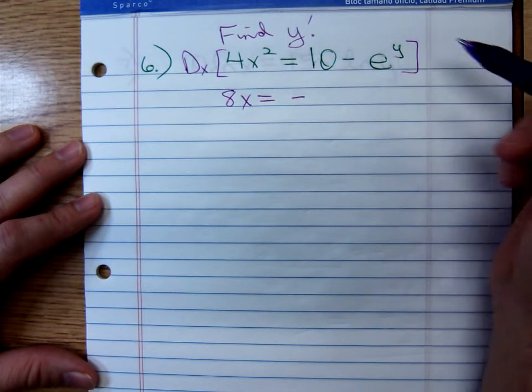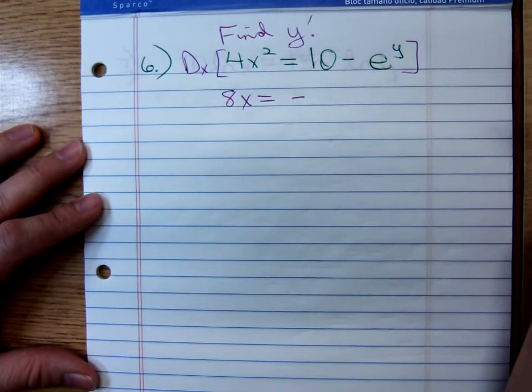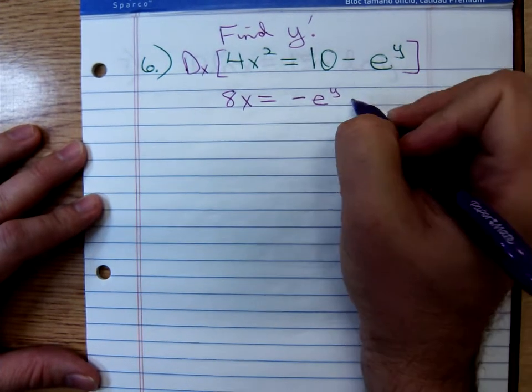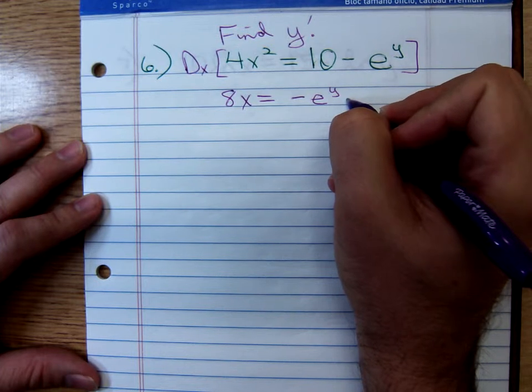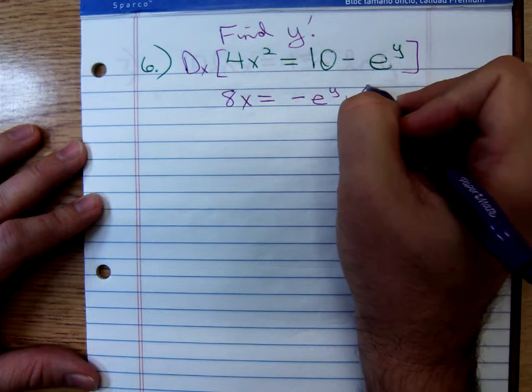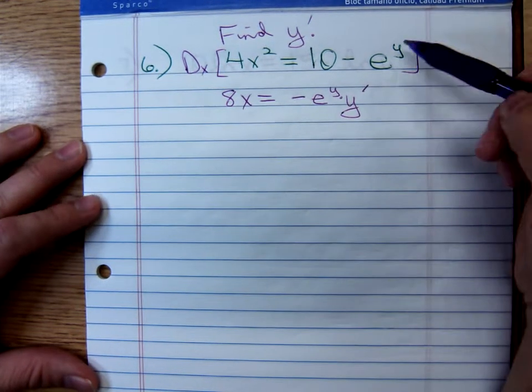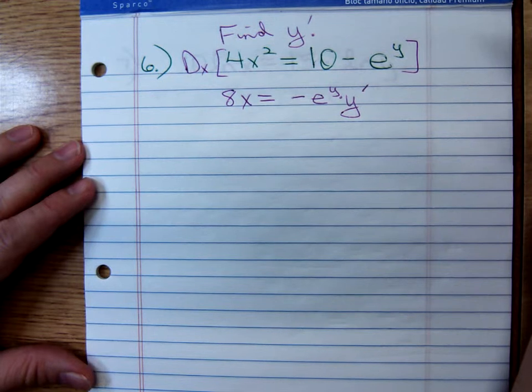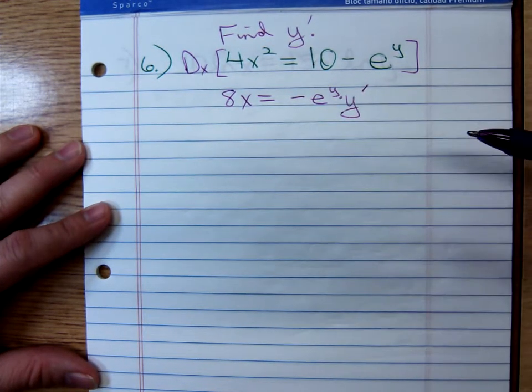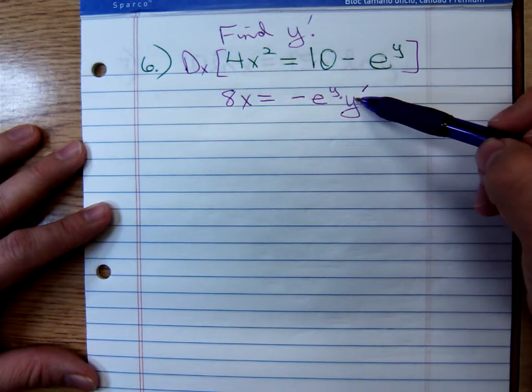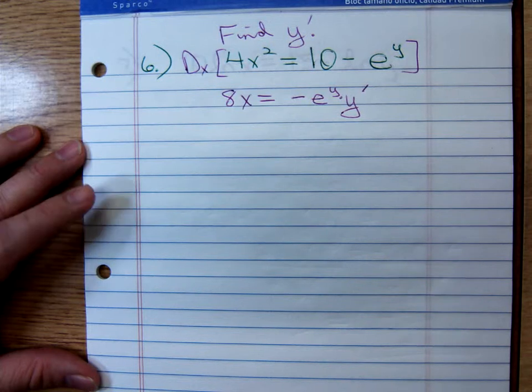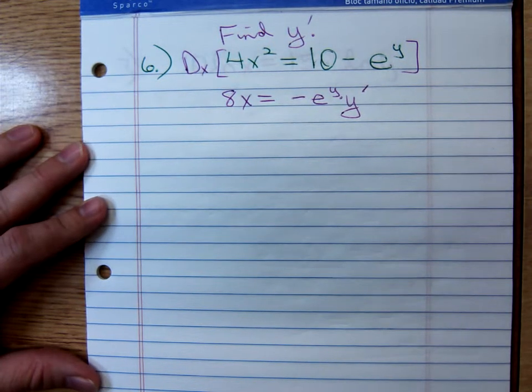Remember the derivative of e to the x is just e to the x. To differentiate a y, you differentiate it the same way you would if it were an x, except, so it's an e to the y, but then you have to multiply by the derivative of the exponent. The derivative of that exponent is y prime. Differentiate e to the y the same way you would if it were an e to the x. The derivative of e to the x is e to the x, but then you have to multiply by the derivative of that exponent, which is being denoted by y prime. And once you realize that, this one really falls out quickly.